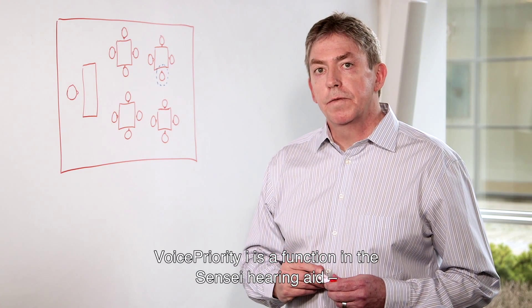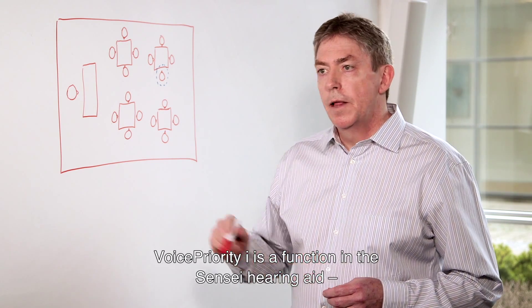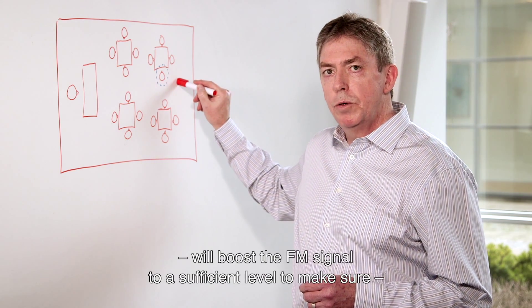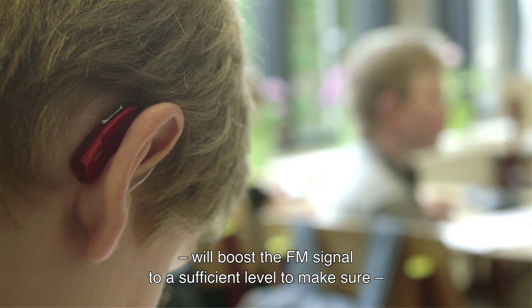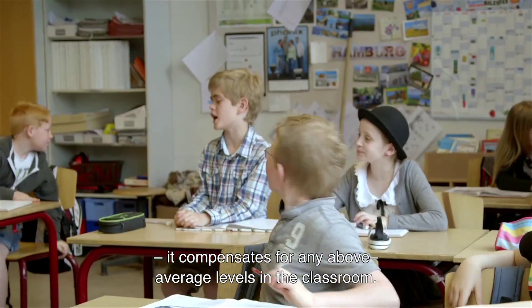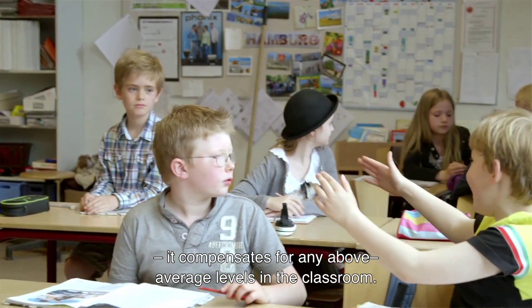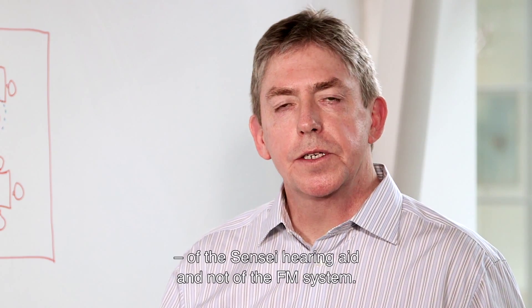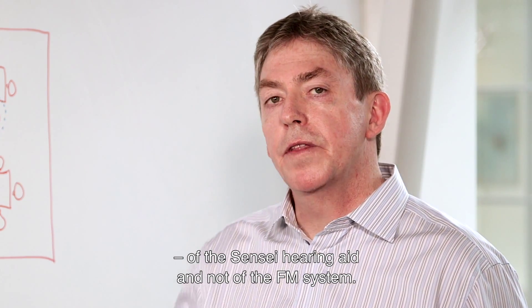Voice Priority I is a function in the Sensei hearing aid that when an FM signal is being detected by the hearing aid, it will boost the FM signal to a sufficient level to make sure it compensates for any above average levels going on in the classroom. It's important to emphasize that Voice Priority I is a feature of the Sensei hearing aid and not of the FM system.